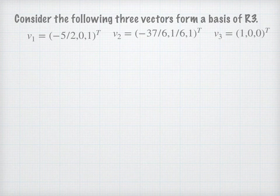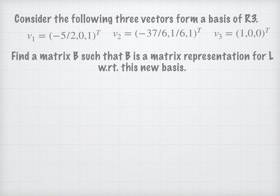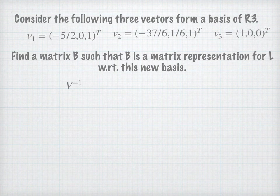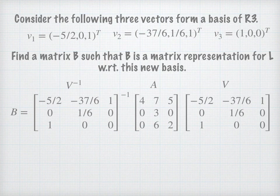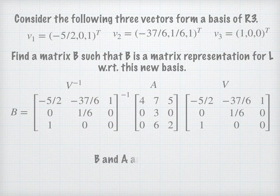The next question is: given a set of three vectors that form a basis of R3, can you find matrix B such that B is a matrix representation for L with respect to this new basis? We can find B using V inverse times A times V. V is non-singular because these three vectors form a basis, so using vectors V1, V2, and V3 to form matrix V, V is non-singular. Then B equals V inverse times A times V — you can do the calculations to find B as a matrix representation for L with respect to the new basis V.